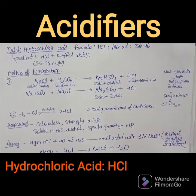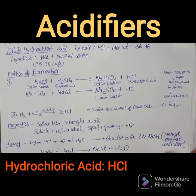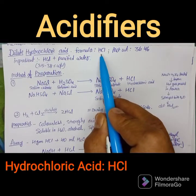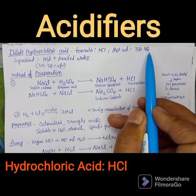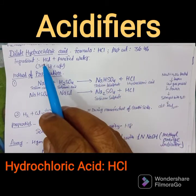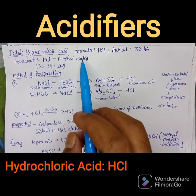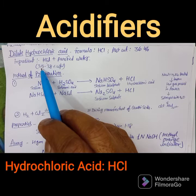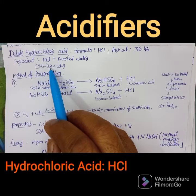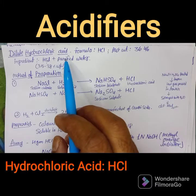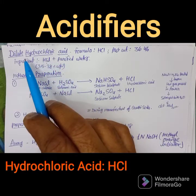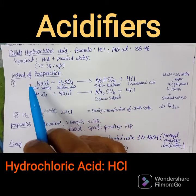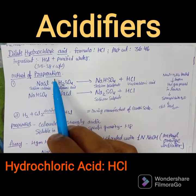The first example under acidifying agents is dilute hydrochloric acid. Its formula is HCl with a molecular weight of 36.46. The ingredients are HCl — not less than 35% w/w and not more than 38% w/w — along with purified water.